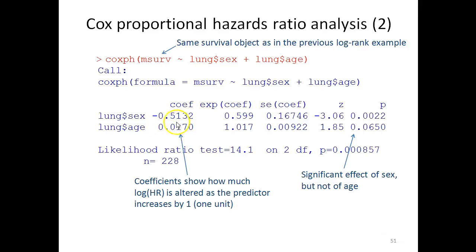And these coefficients refer to the increase or change in the logarithmized hazard ratio for each unit increase in the predictor. So in this case, for example, for each year's increase in age, the logarithmized hazard ratio increases by 0.017.